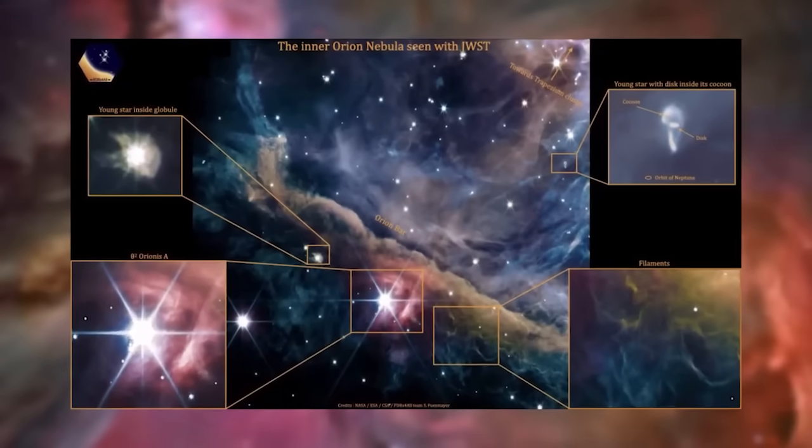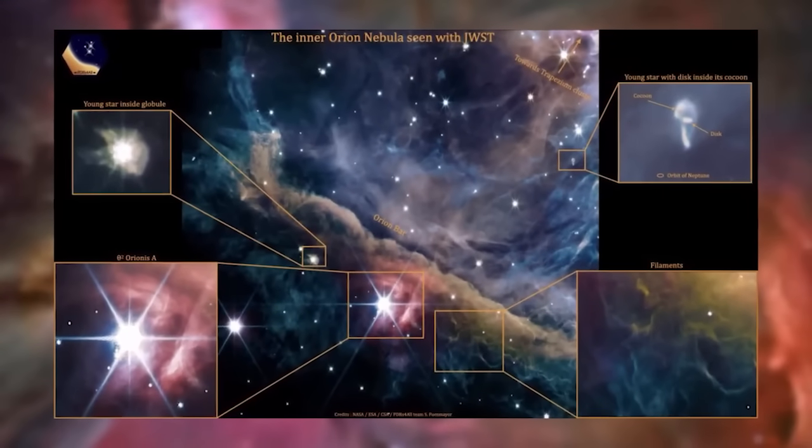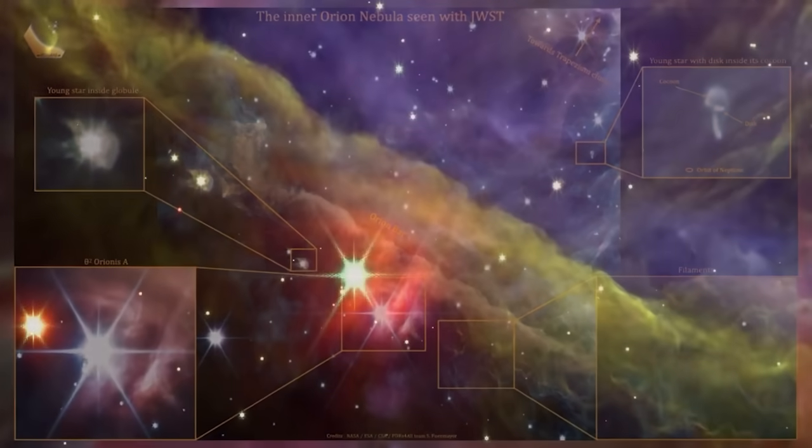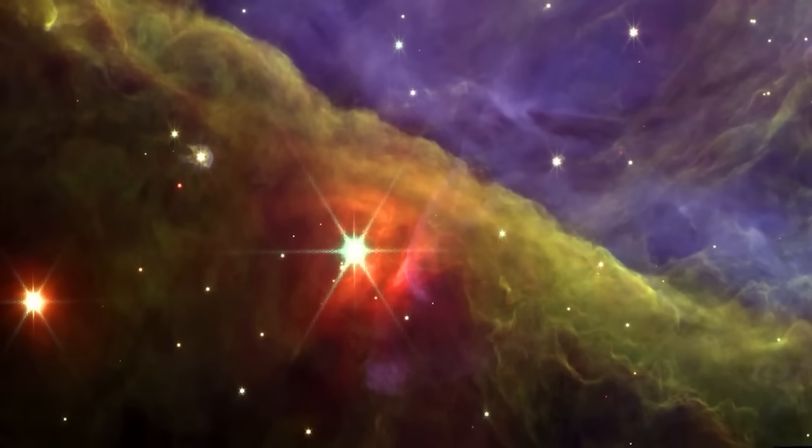On the photograph taken by the James Webb Colorized, we can observe in a very precise way the Orion Bar, a wall of gas and dust which is inside the nebula.